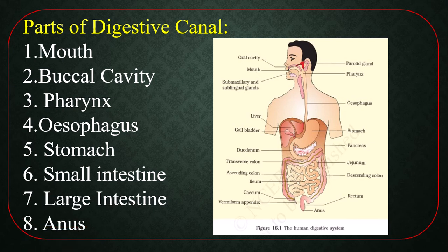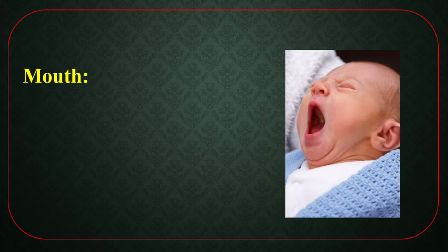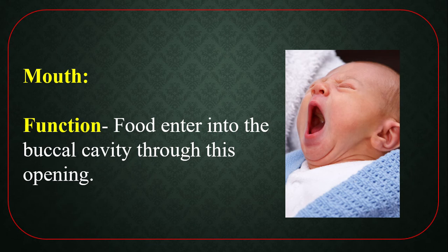Dear students, you have to practice the drawing of the digestive system of the human body. It will be tough for you, but you have to practice more — then it will be easy. The mouth: on the upper side of the mouth is the upper lip and on the lower side is the lower lip. Through opening and closing of these lips, we control the taking of food. Food enters into the buccal cavity through this opening.